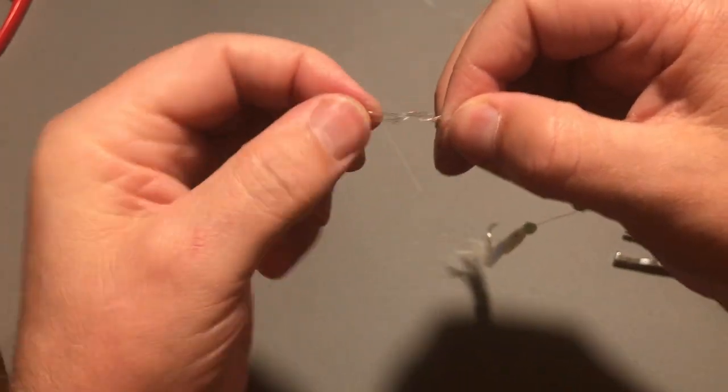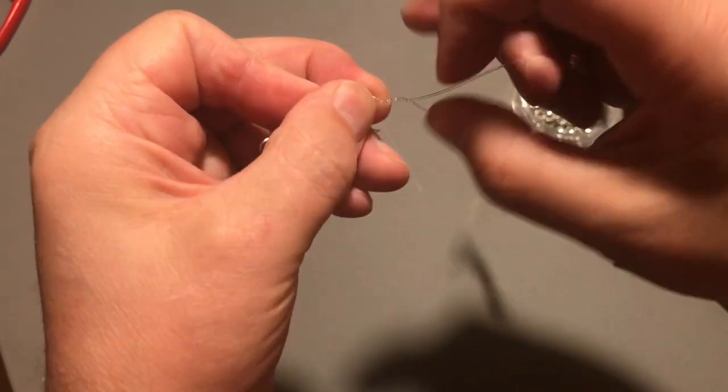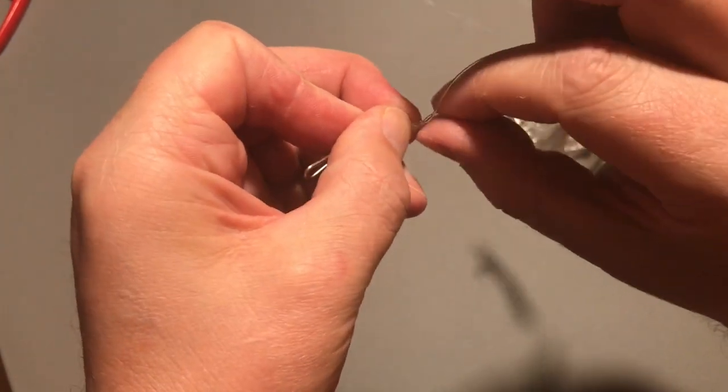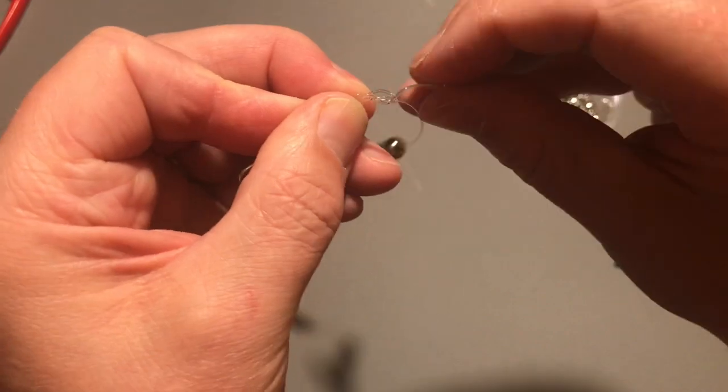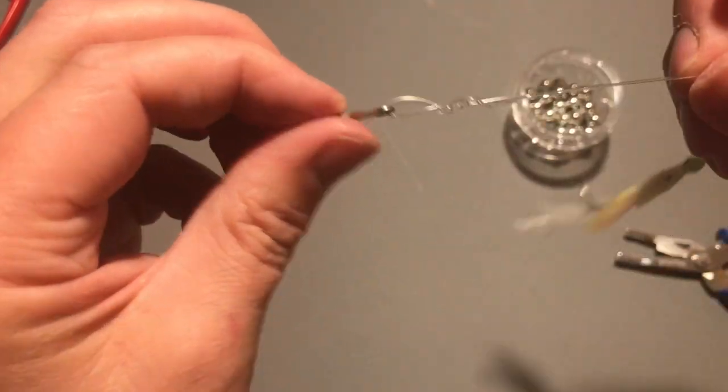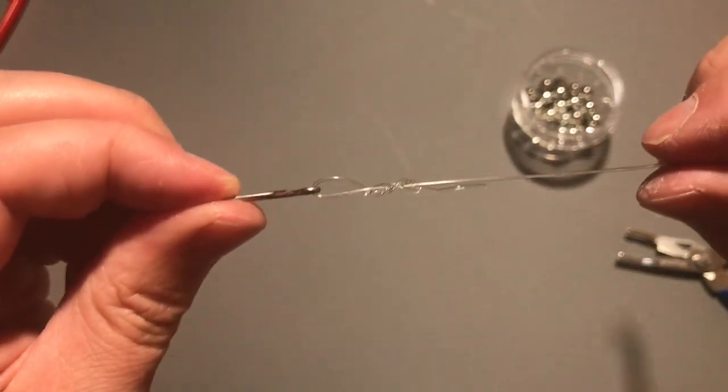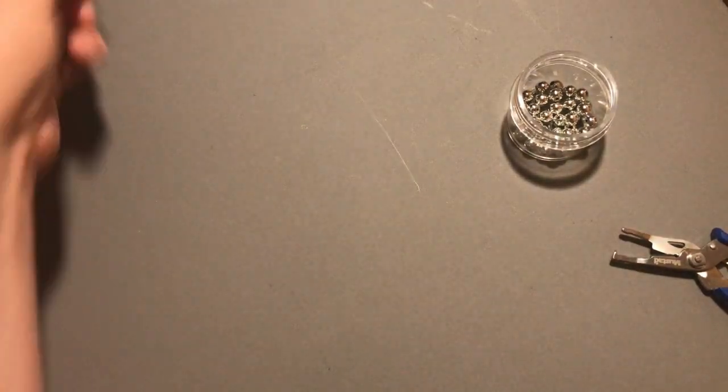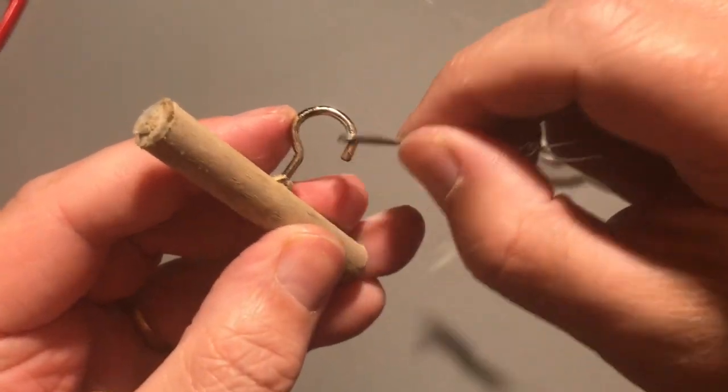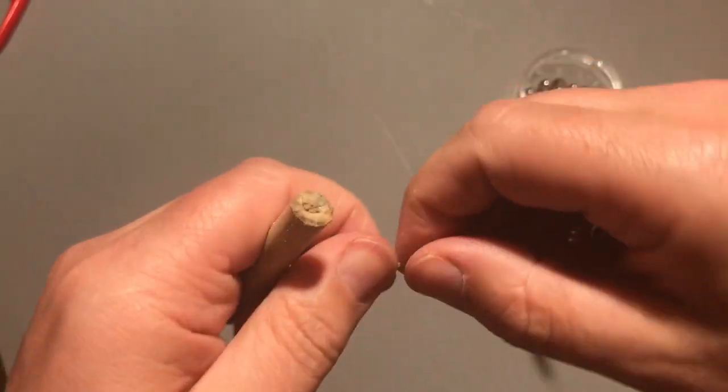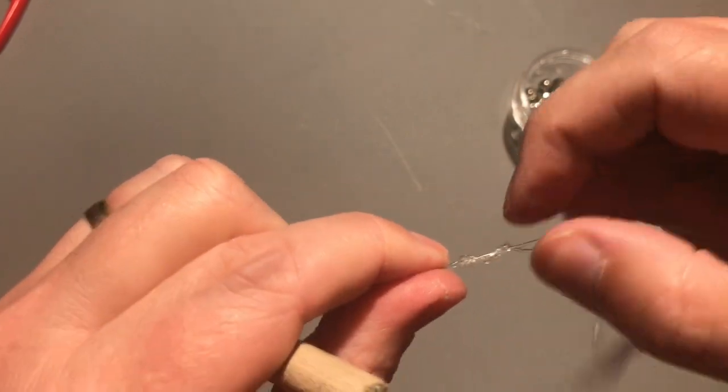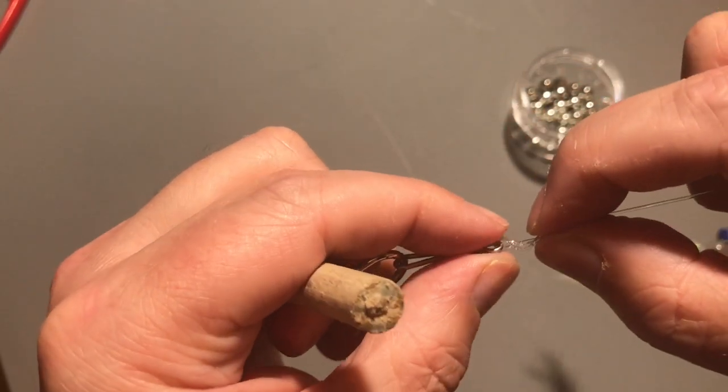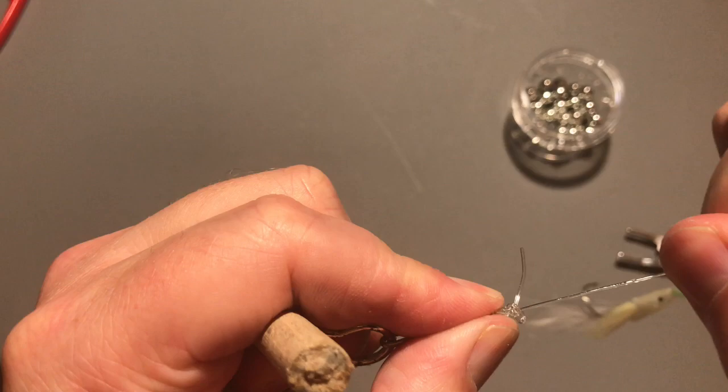Now there's not a lot of spare line to work with here guys so it can be a bit finicky but well worth it. Then just before tightening up on the knot, a bit of lubrication. I like to use a little rig puller that I've made just to ease that knot down to the eye before you tighten up fully.